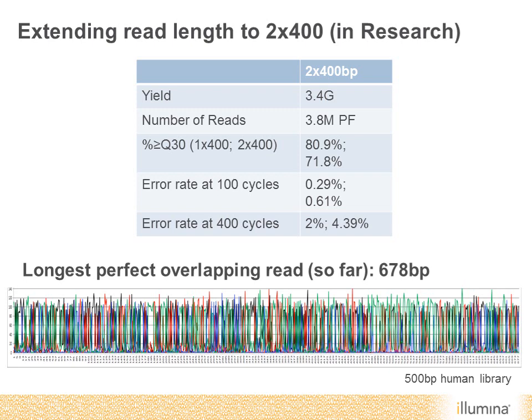Just to show the latest update: the longest perfect read achieved so far is 678 bases, achieved with a 500 base human library where we stitched together read one and read two looking for perfect overlaps and found the longest read of 678 bases. This wasn't an optimal library for demonstrating extended read length, but we're very confident we'll be able to push further.